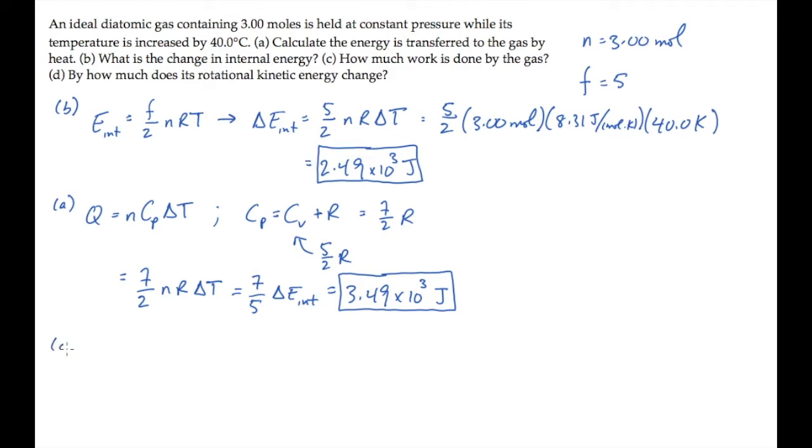Part C asks us for the work done by the gas. At constant pressure, that work is P times delta V, the change in volume. And from the ideal gas law, this equals nR delta T, only valid at constant pressure.